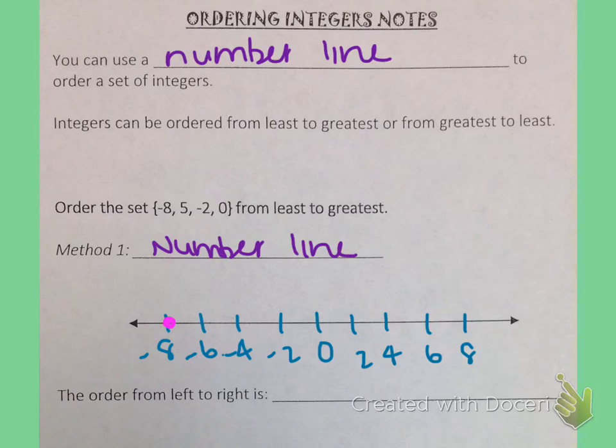5, now I don't see a 5 on my number line but I do know it's positive so it's to the right of zero. And 5 is in between 4 and 6 so that's where 5 is going to be. Negative 2 is here and then 0 is right there. So if we're going from least to greatest then we're going to go left to right. And let me show you something that I do.